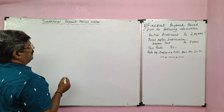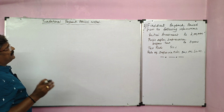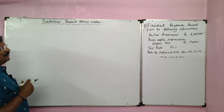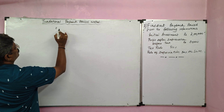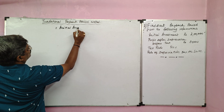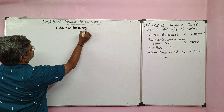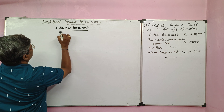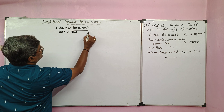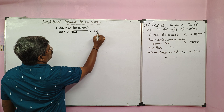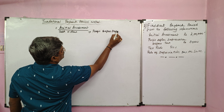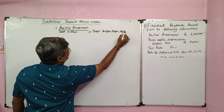Traditional payback period method. What is the formula? As covered in the first part, the formula is: initial investment divided by cash inflows.